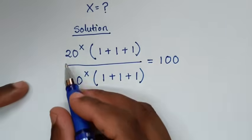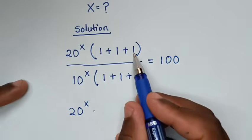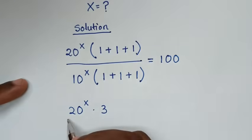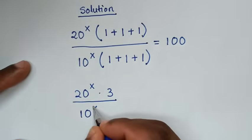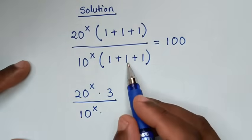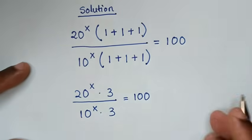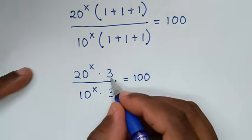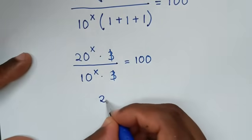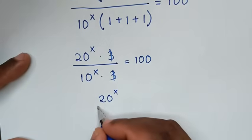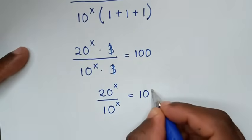In the next step, it will be 20 power x times (1 plus 1 plus 1), which is 3, over 10 power x times (1 plus 1 plus 1), which is 3, is equal to 100. To simplify, this 3 will cancel with 3, so it will be 20 power x over 10 power x is equal to 100.